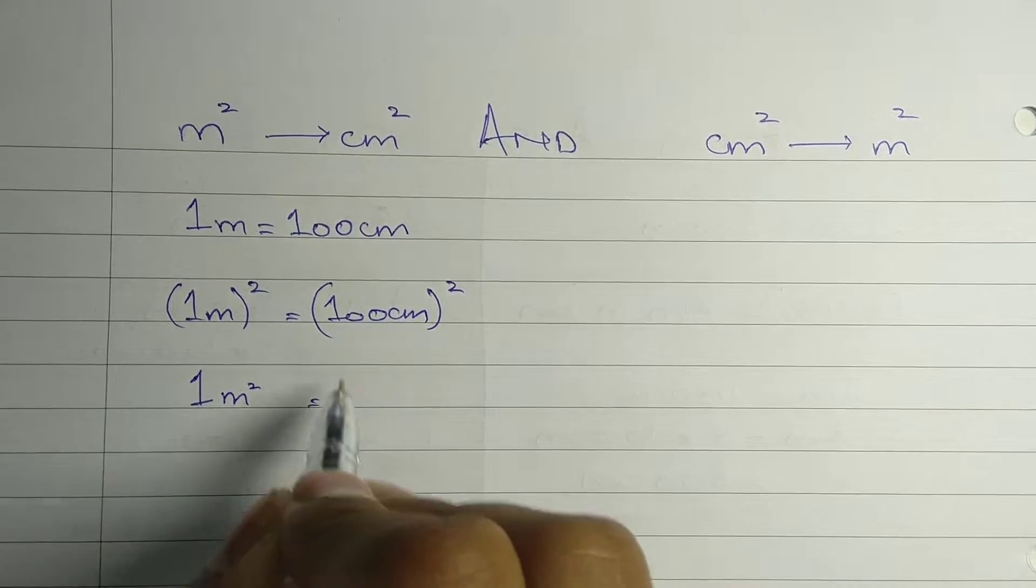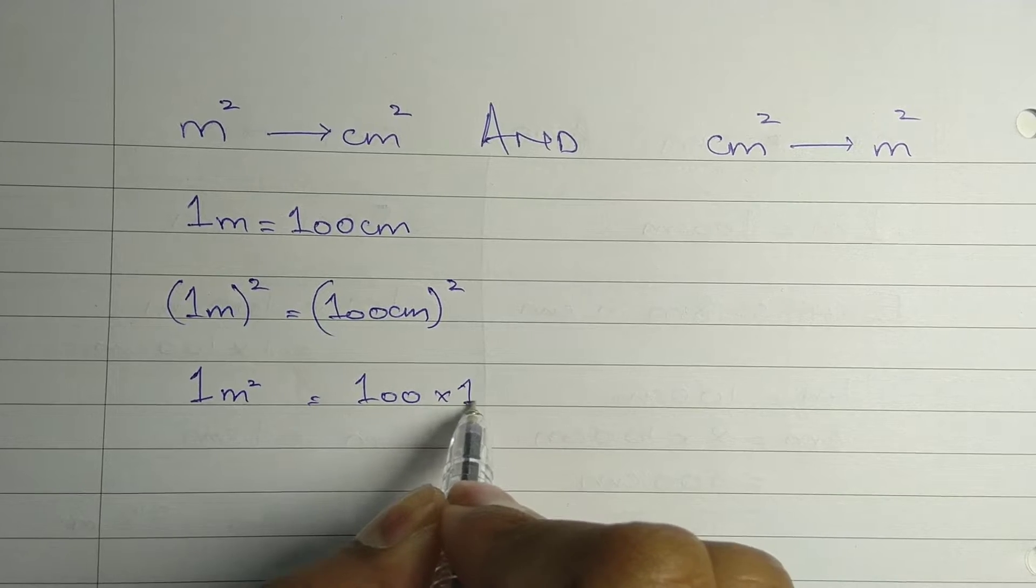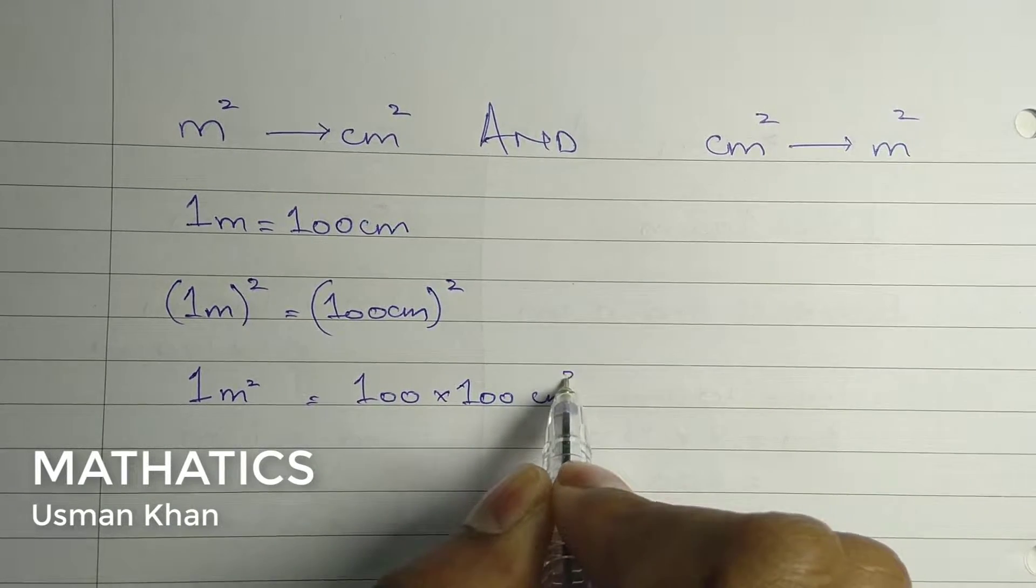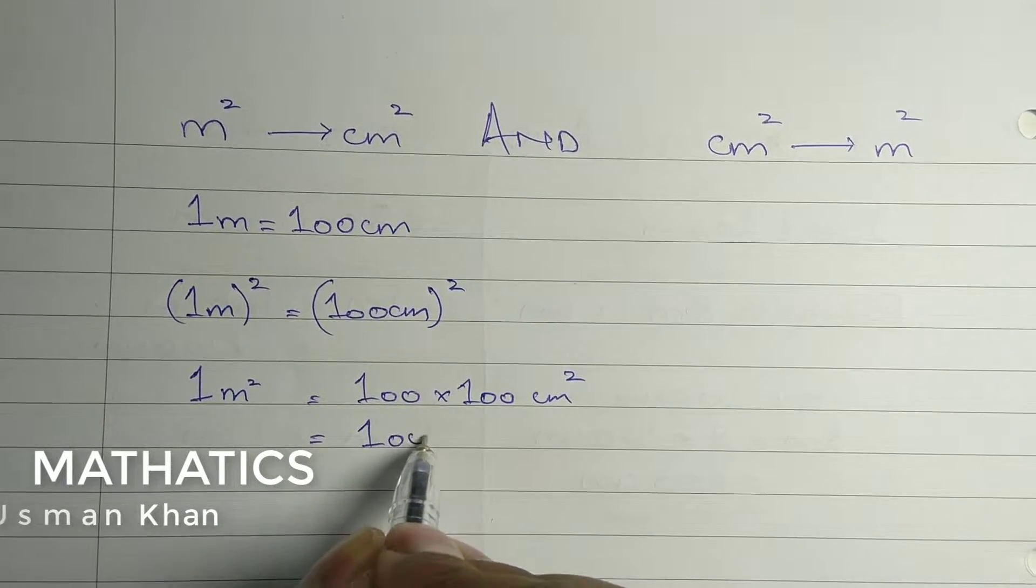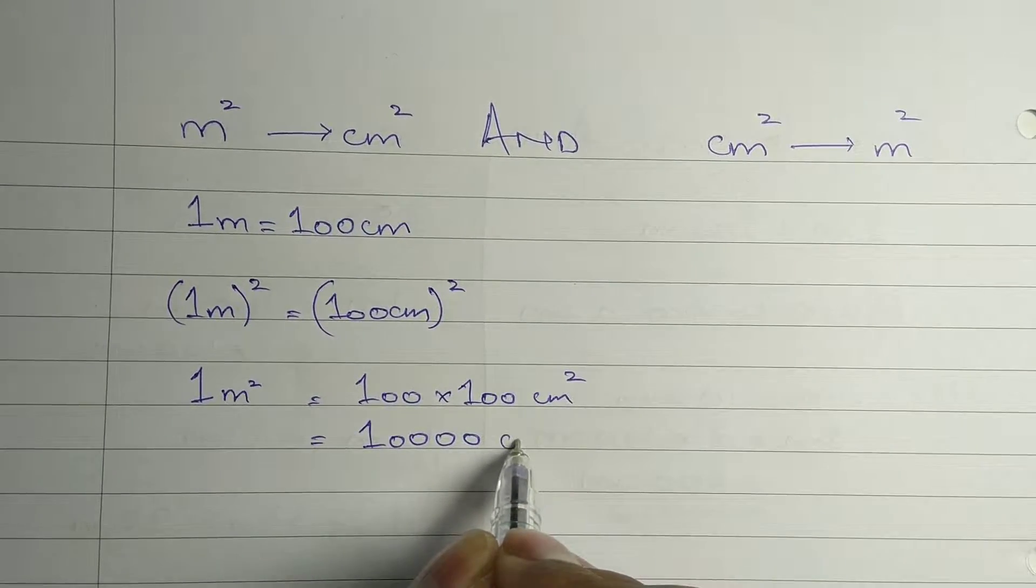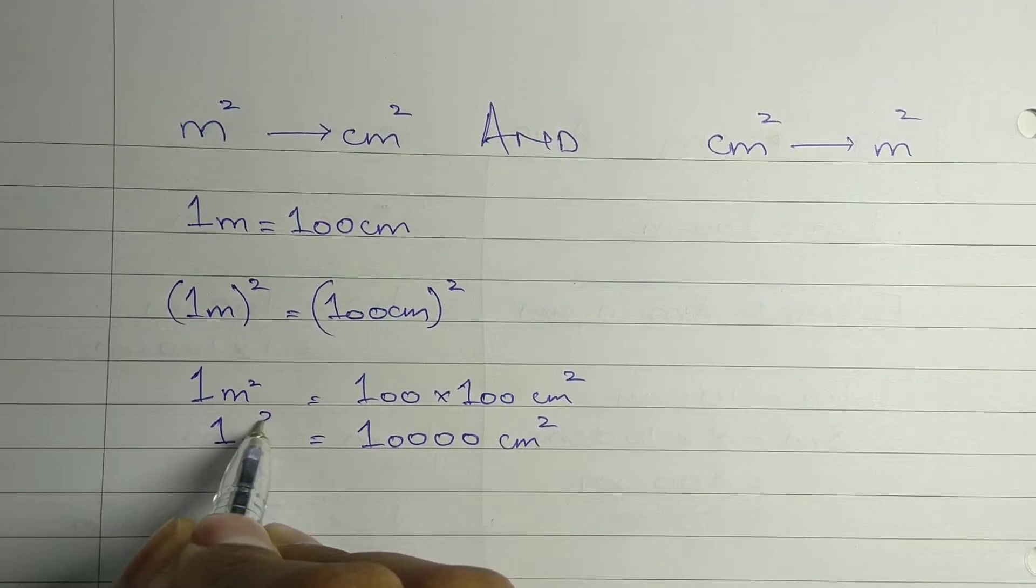So 1 squared equals 1 and 100 squared will be 100 multiplied by 100 centimeter square. This will become 10,000 centimeter square equals 1 meter square.